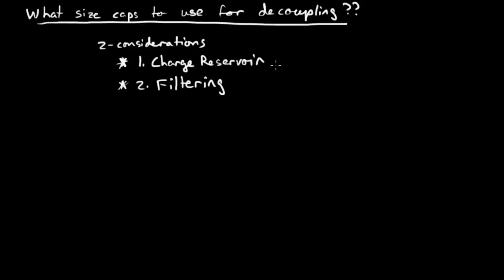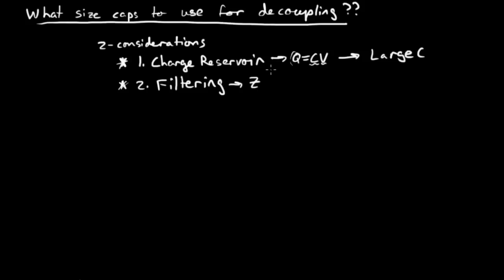What size capacitors should we have for each consideration? For a charged reservoir, if we look at the equation Q = CV, we want lots of charge, lots of Q, so for any given voltage we want to maximize C — this leads us to wanting a large capacitance. For filtering, we want the impedance, which equals 1 over jωC, to be very low at some non-DC frequency. So again, we want C to be large.